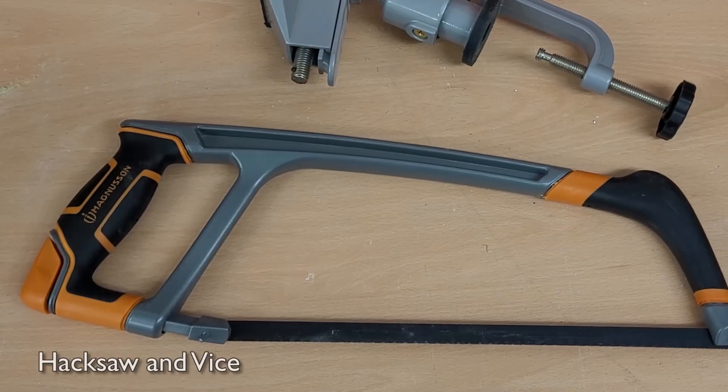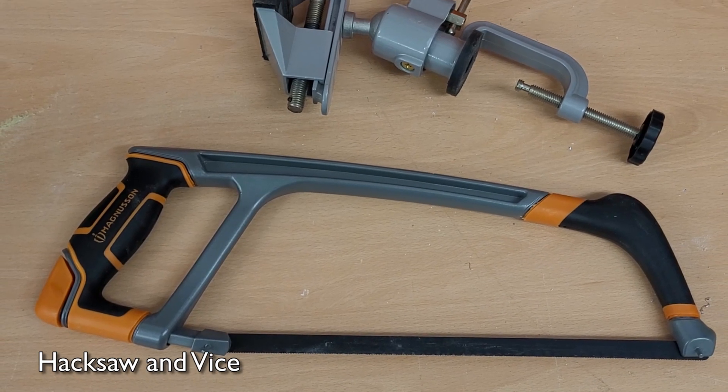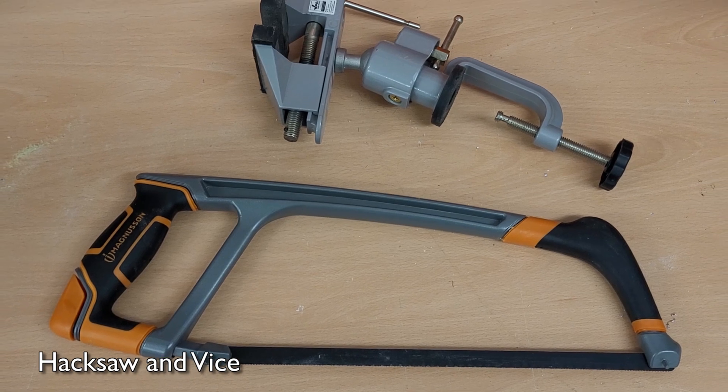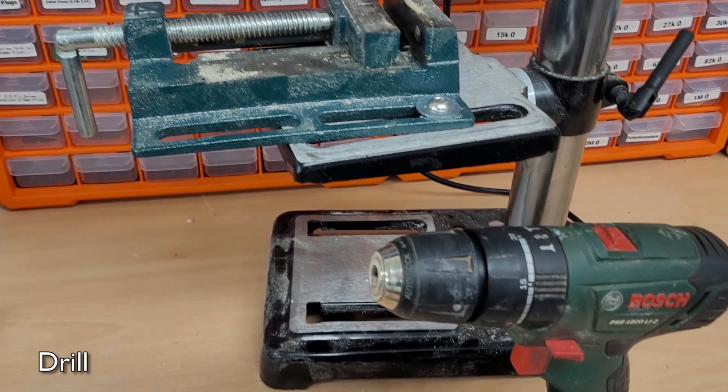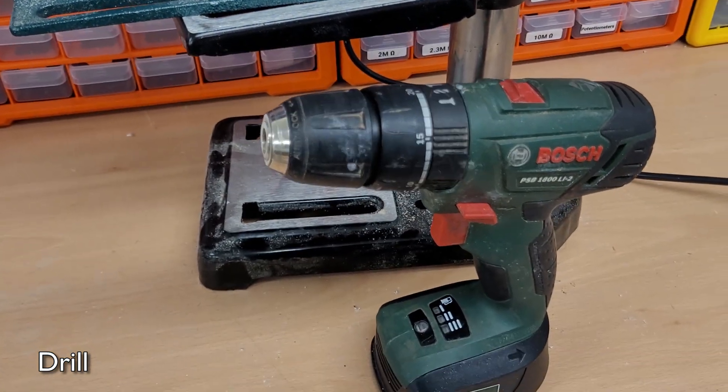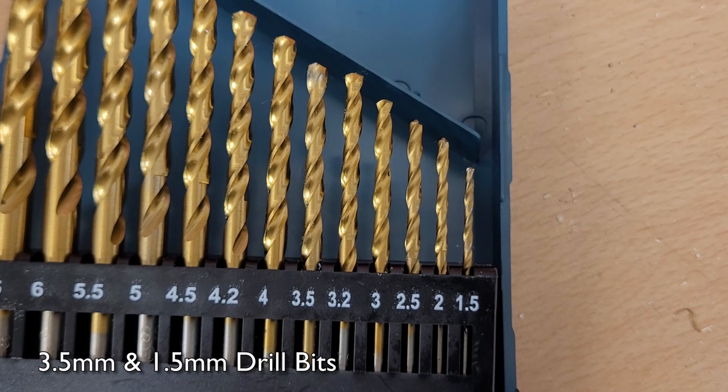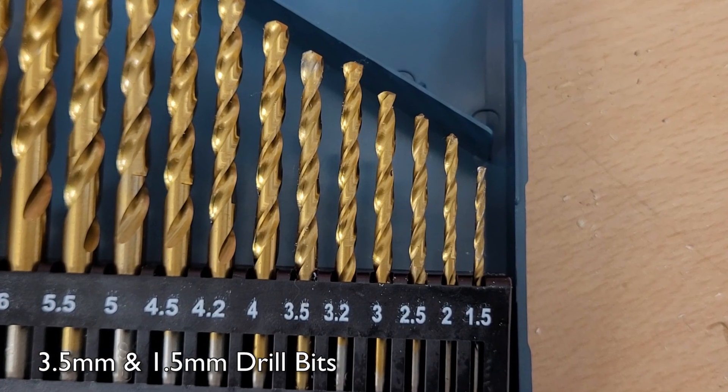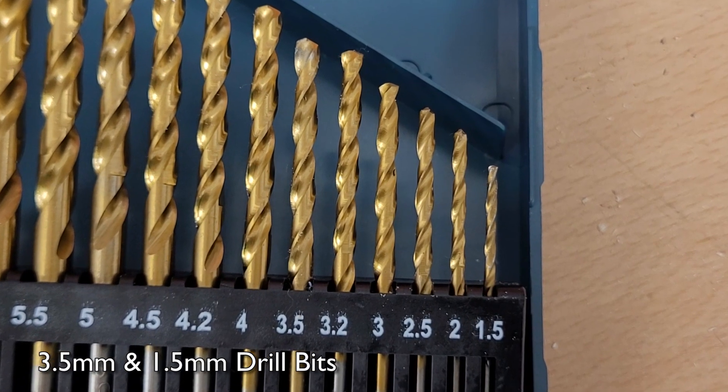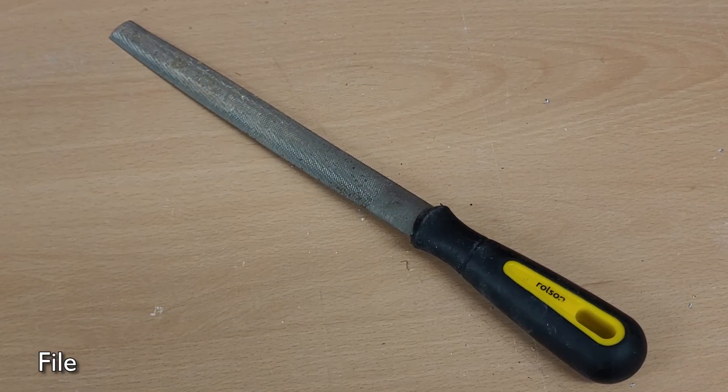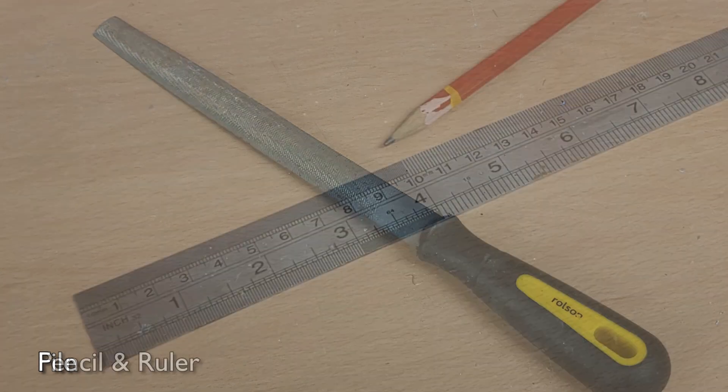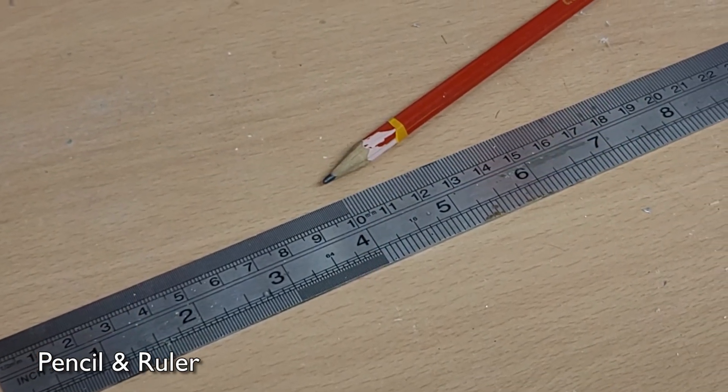You'll need a way to cut the aluminium and for this I'm using a hacksaw and I'll be holding it in place with a vise. You'll also need a way to drill through your aluminium. I'm using my pillar drill but a normal power drill would also do the job. You're going to need a 1.5 millimeter drill bit and a larger 3.5 millimeter drill bit suitable for going through metal. A file is useful for taking off any sharp edges and you'll need a pencil and ruler for measuring up.